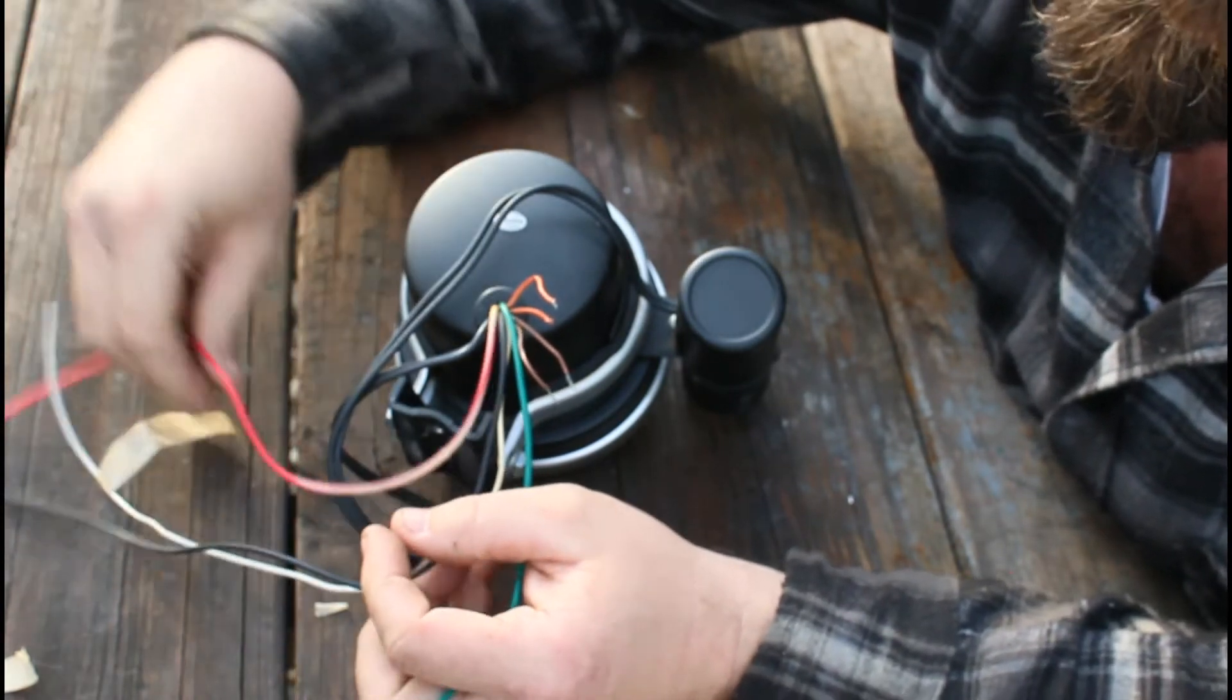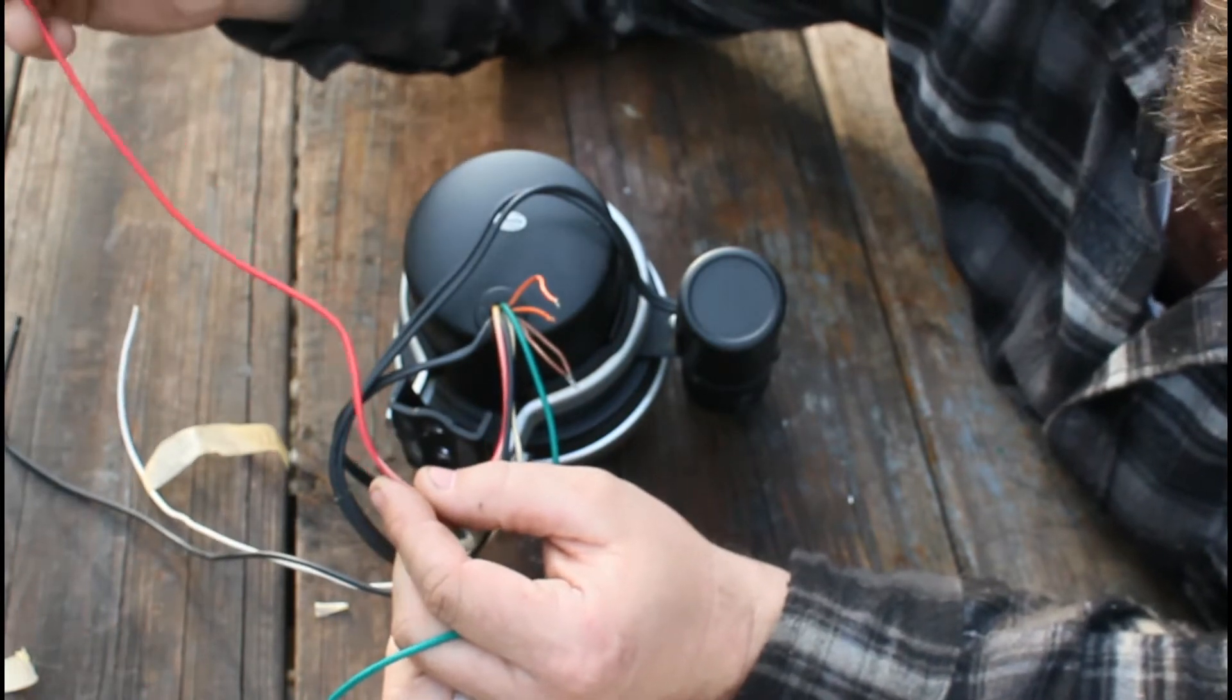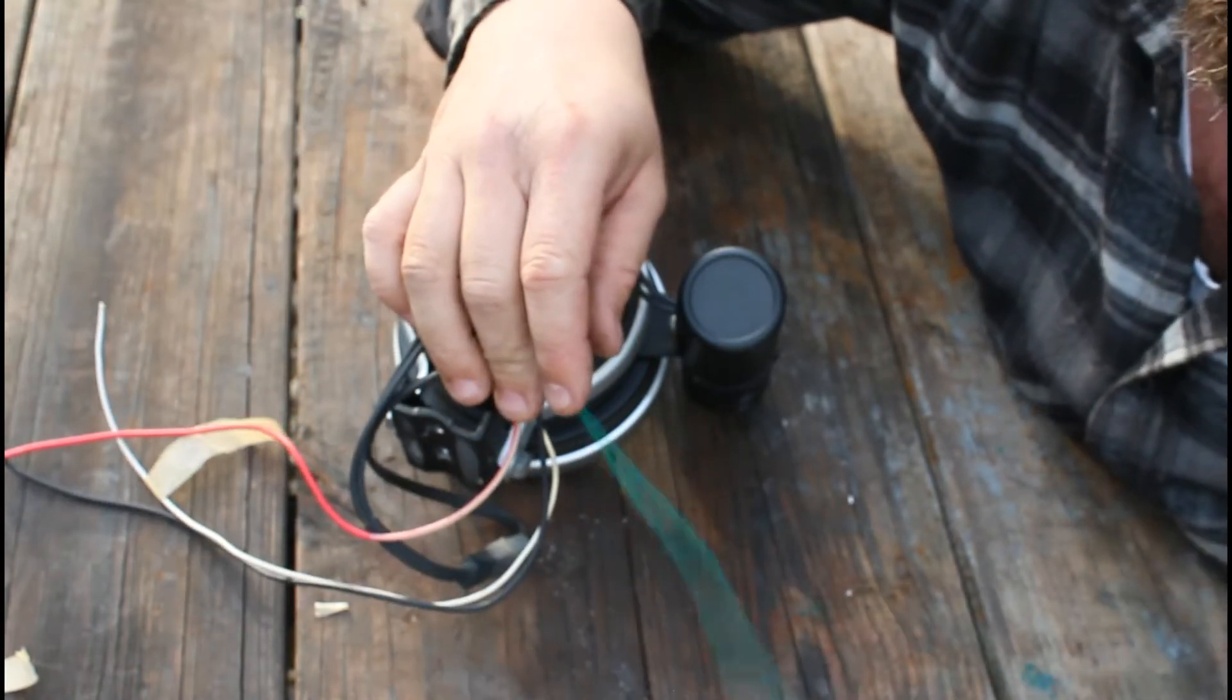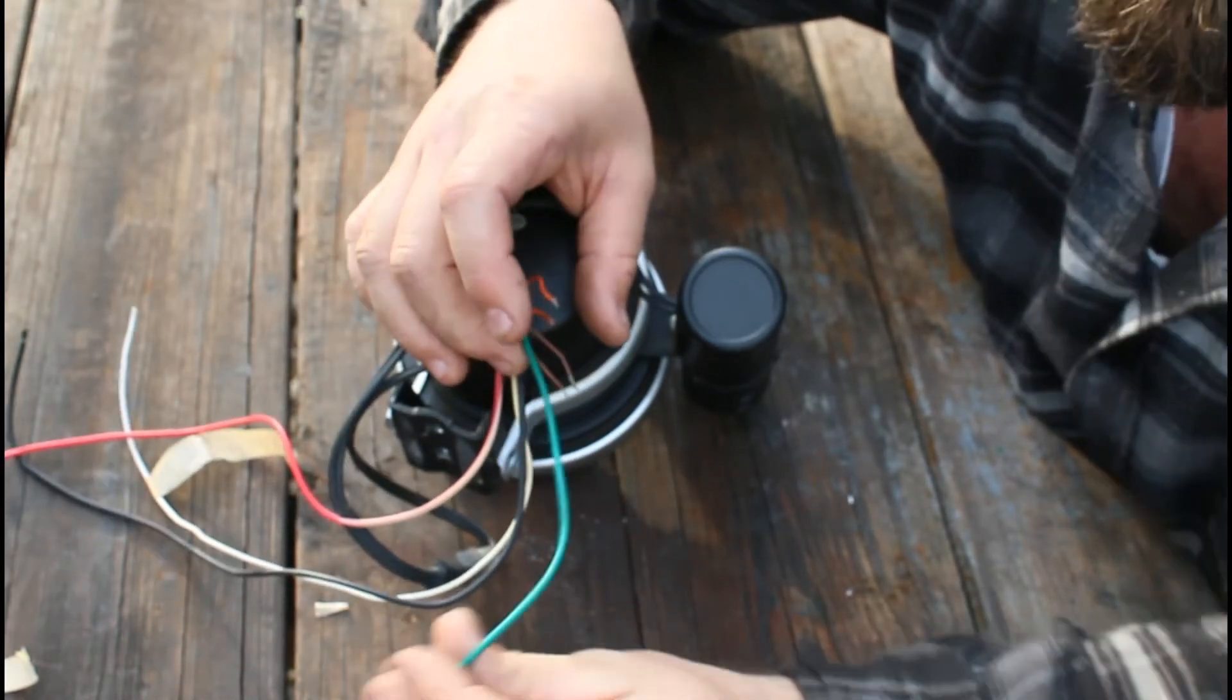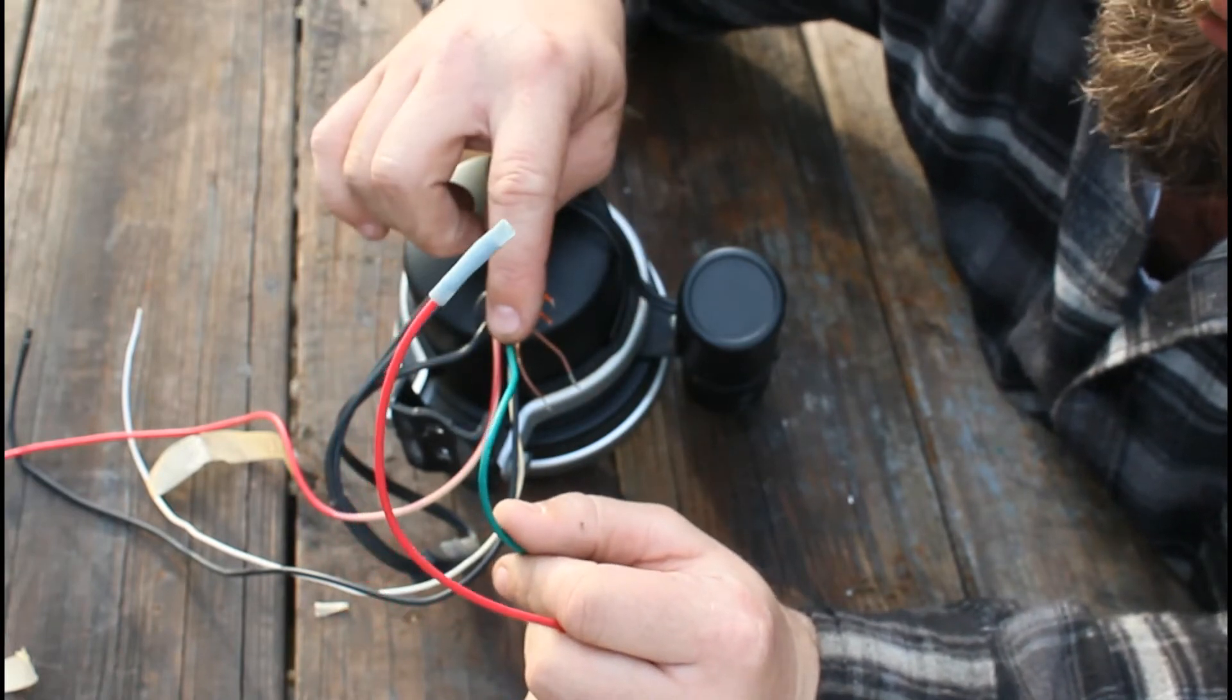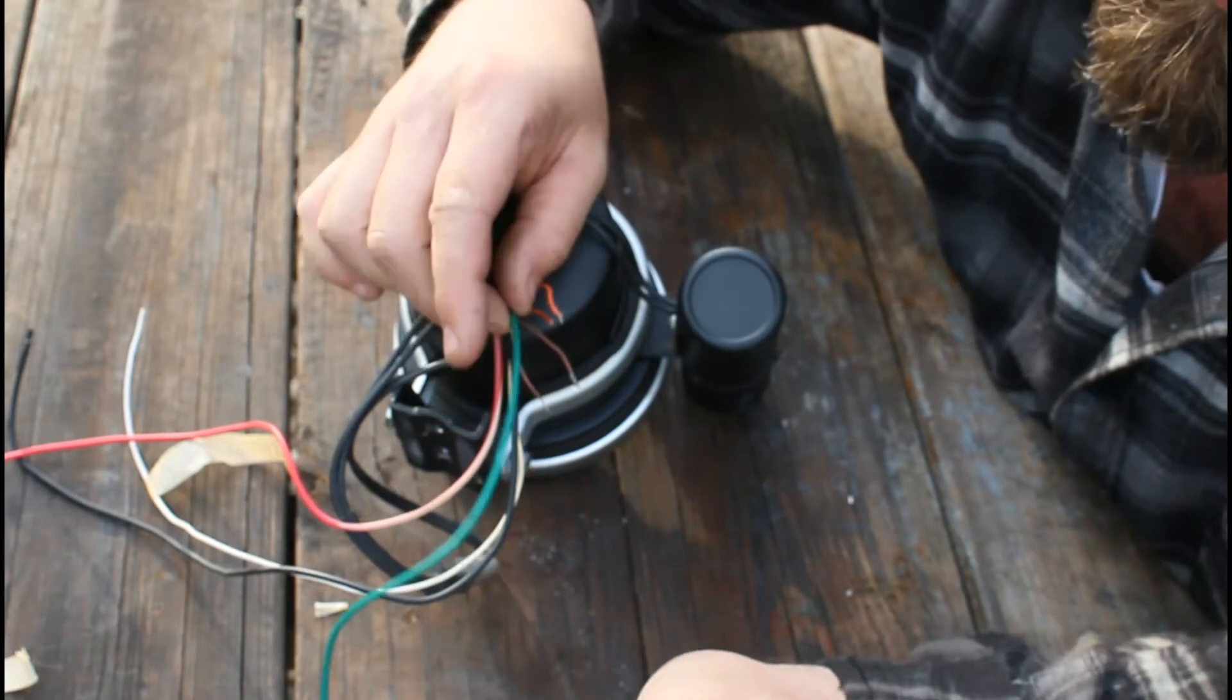The red wire is going to go to a power source, ignition key switch, whatever. And then this green wire is going to go to the ground side of your coil, whether it's an HEI distributor or a regular coil. This will go to your ground side of it.